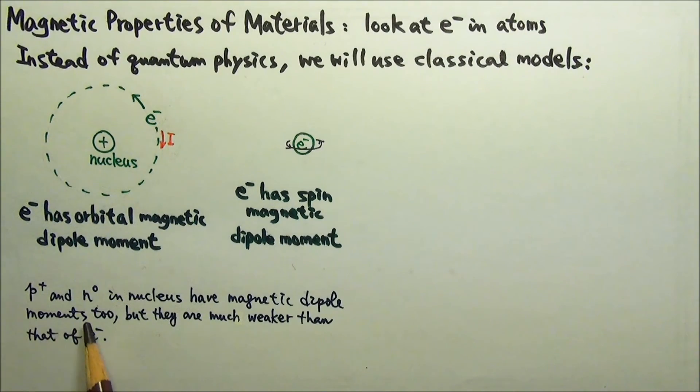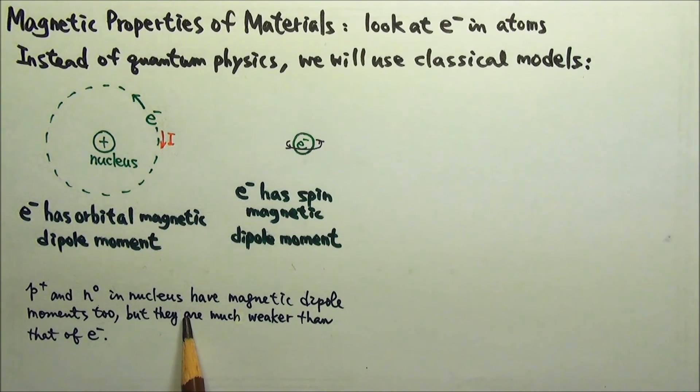The protons and neutrons in the nucleus also have magnetic dipole moments, but they are much smaller than that of an electron and can usually be neglected.